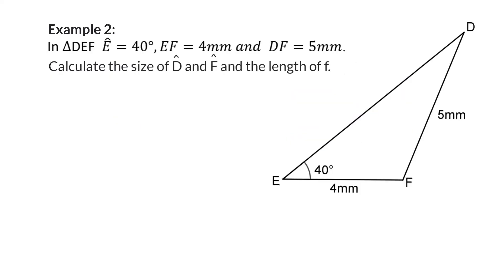Example 2. In triangle DEF, angle E is 40 degrees, EF is 4 millimeters, and DF is 5 millimeters. Calculate the size of angle D and angle F and the length of f. Once again, I'm going to start off rewriting the sides in terms of lowercase letters and indicating the given information on the sketch.